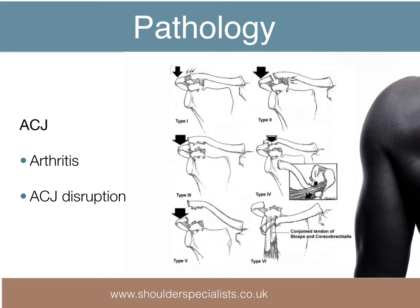The acromioclavicular joint may become degenerate and painful over time, or acutely unstable as a result of trauma to its ligaments. Trauma of increasing severity progressively damages, then disrupts, the acromioclavicular ligaments, followed by the strong coracoclavicular ligaments. Stabilisation surgery may be needed in those patients where the coracoclavicular ligaments have been disrupted. For more detail, look out for the video on clavicle and AC injuries.